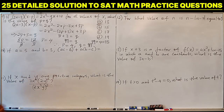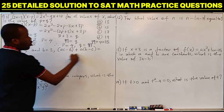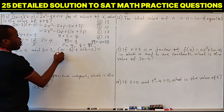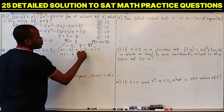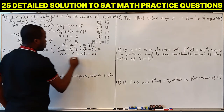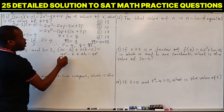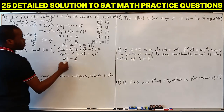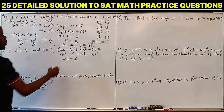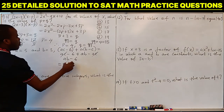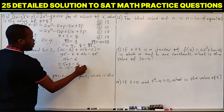Question 10: if A equals 5 and B equals 3, what is the expression equal to? Opening the brackets gives AC minus 6 plus AB minus AC. The AC terms cancel, leaving AB minus 6. Since A is 5 and B is 3, this is 5 times 3 minus 6, which is 15 minus 6, and that equals 9.